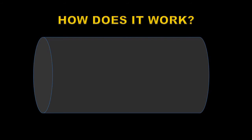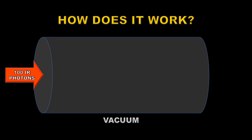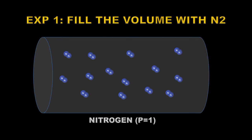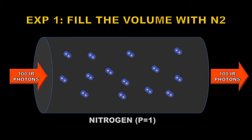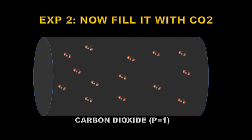So how does this all work? Let's take a volume which at the moment is full of vacuum — nothing. If we put 100 IR photons in one end, because there's a vacuum, 100 IR photons will come out the other end. For our first experiment, we'll fill that volume with nitrogen at pressure one — an arbitrary unit. We put 100 IR photons in one end and because nitrogen is completely transparent to infrared, we get 100 IR photons out the other end. For our second thought experiment, we'll fill that same volume with carbon dioxide at the same pressure of one, then pass 100 IR photons in at one end.